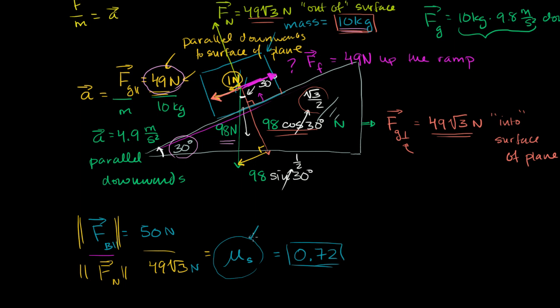So the coefficient of static friction is 0.72. We call it the coefficient of static friction because it deals with the ratio of the force needed to just overcome friction relative to the normal force, when the object is stationary. In a future video I'll cover the difference between static and kinetic friction — for certain materials the coefficient is noticeably different when the object is moving versus stationary. In the next few videos we'll use the coefficient of friction to solve more problems.